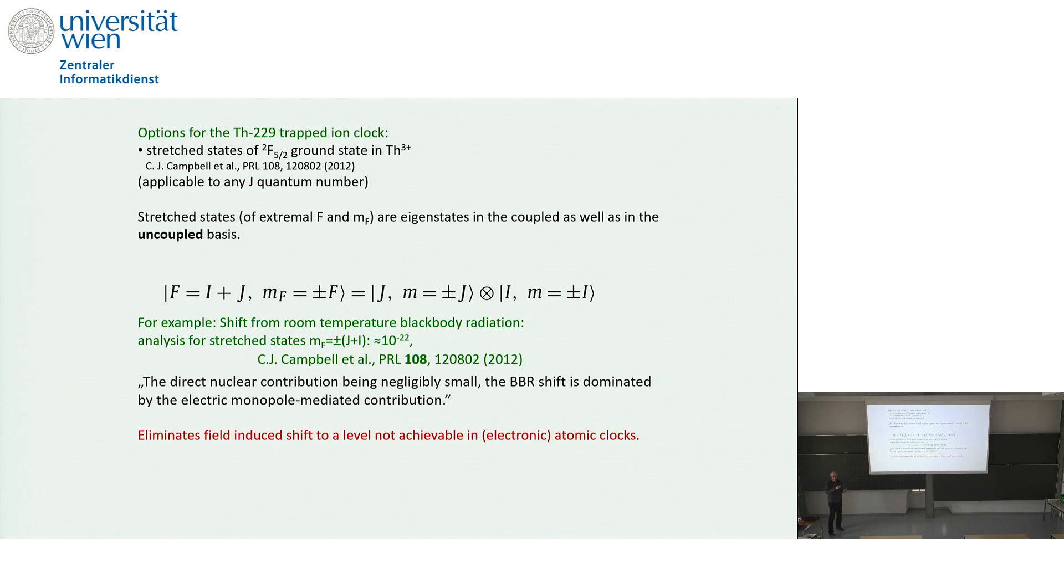And interestingly enough, it's still not the nuclear contribution. It is still electronic contribution. So it's small changes to the electronic environment, to the electronic charge density at the nucleus, that produces this effect. The effect of the nuclear polarization would be still smaller. So yeah, a system where one would - an interesting and precise clock - one probably would not have to worry about blackbody radiation anymore, just to give this outline.